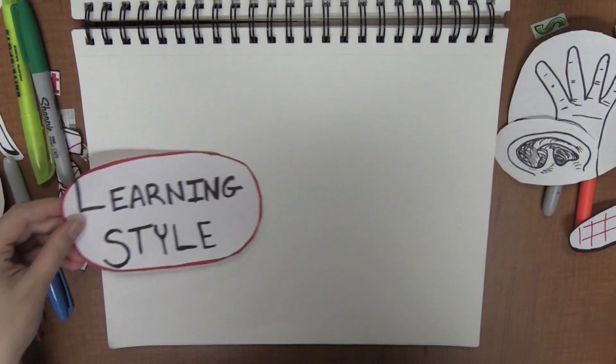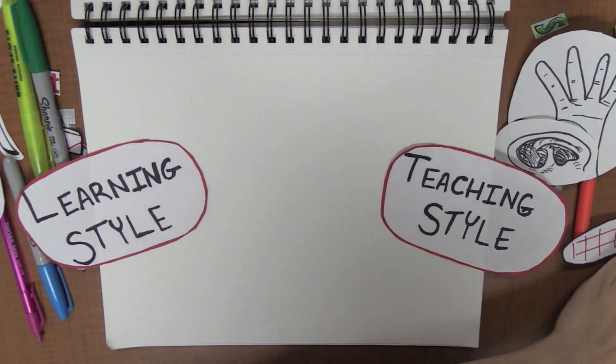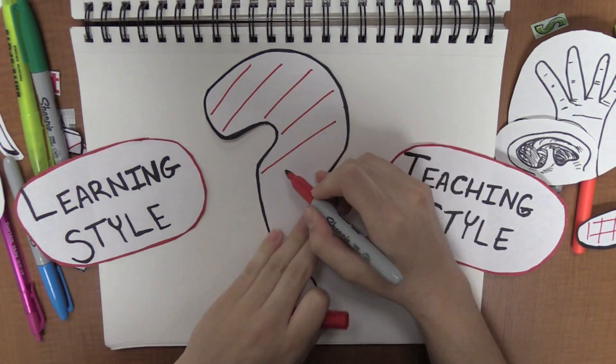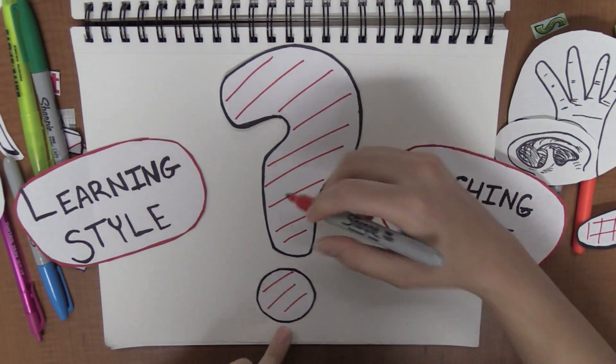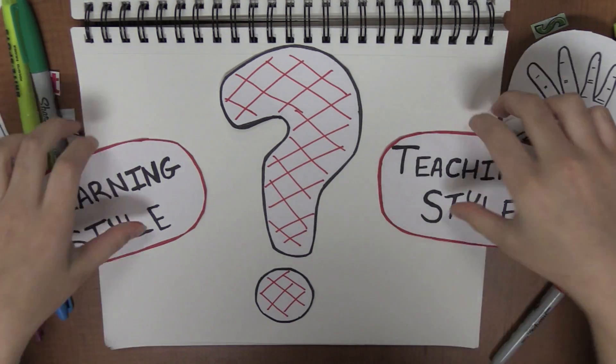If there is any truth to the idea that learning styles and teaching styles go together, then learners with a certain style should learn best with instruction tailored to that style. But does scientific research really support the existence of these different learning styles? Are you really just confined to one learning style? Here's why the answer is no.